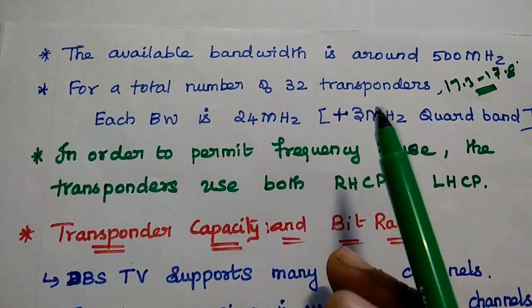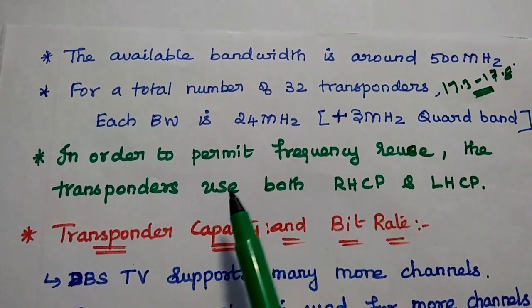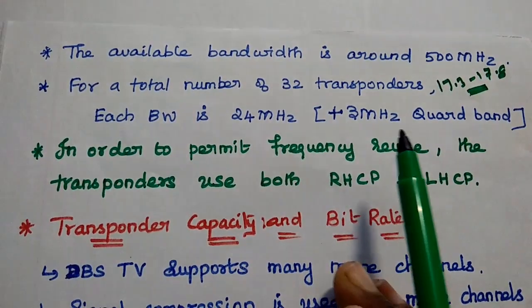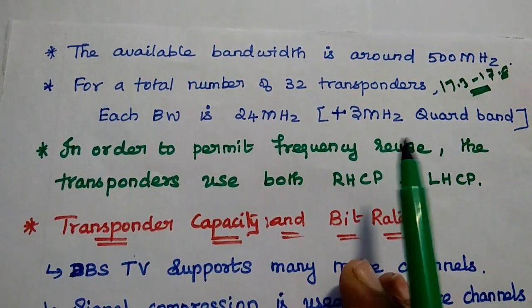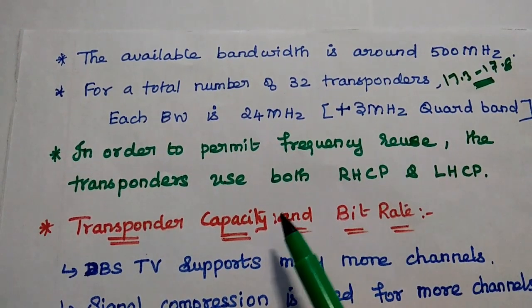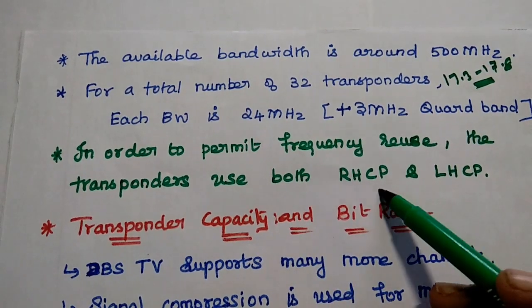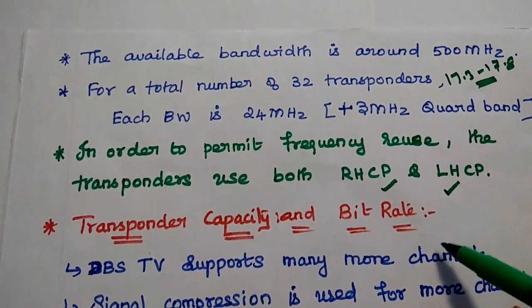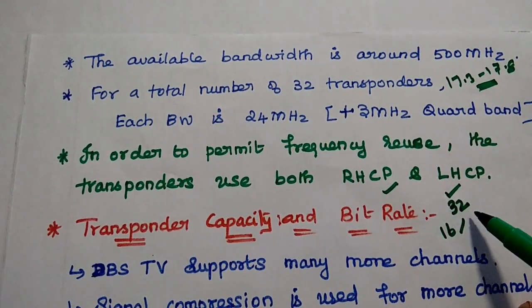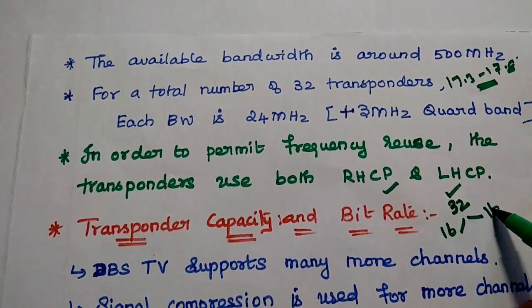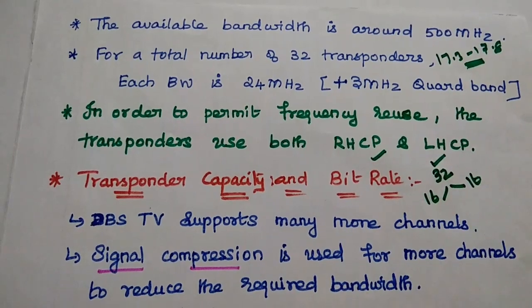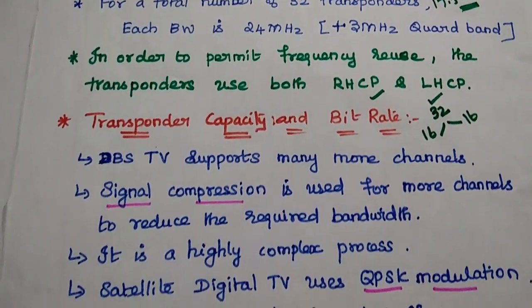For a total of 32 transponders, each bandwidth is 24 MHz plus 3 MHz as guard band between two channels. In order to permit frequency reuse, the transponders use both RHCP as well as LHCP polarization. For example, out of 32 transponders, 16 may be RHCP and the remaining 16 may be LHCP, supporting both polarizations for frequency reuse.